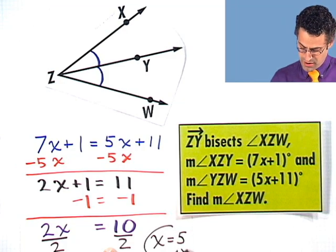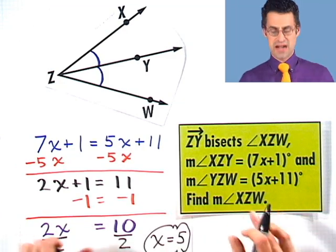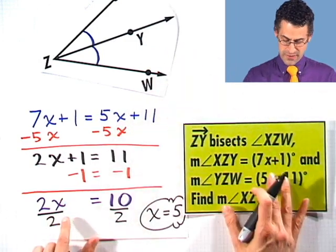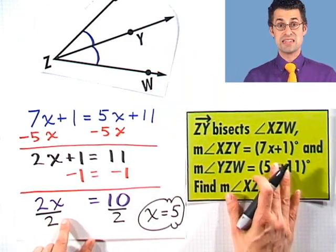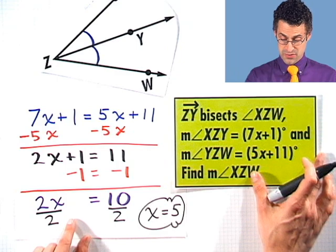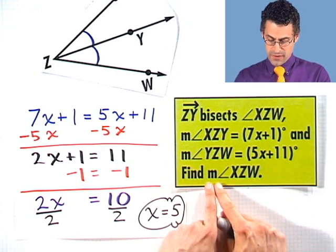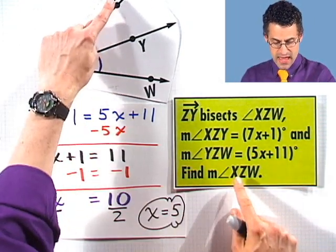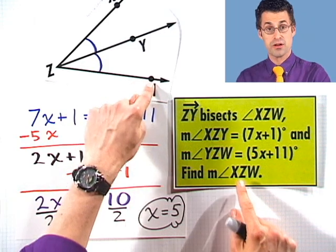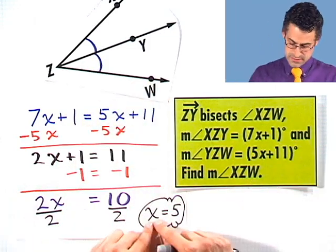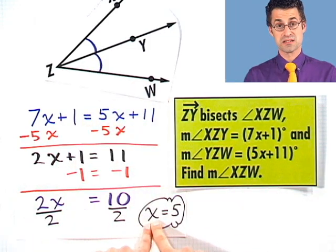Now at this point you might say, oh my gosh, I'm so tired. Whew, we got the answer. X equals 5. But it turns out that didn't answer the actual question that our friend posed. Because the actual question was, find the measure of angle X, Z, W. All we found was the variable little x. That's 5. So how do I find this angle?